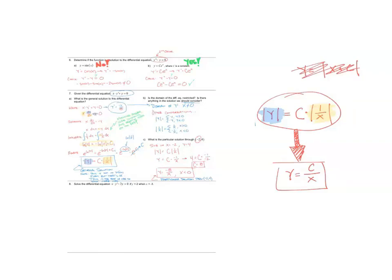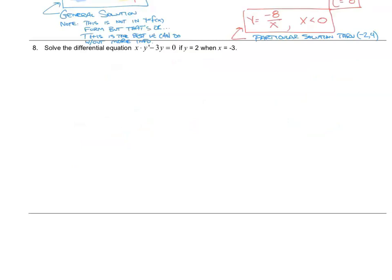Let's jump into problem number eight. We have: solve the differential equation x times y prime minus 3y equals zero, with initial condition y equals 2 when x equals negative 3. Writing as x times dy dx minus 3y equals zero, solving for dy dx gives 3y over x. Note that x cannot equal zero — checking for domain restrictions is part of the write step. Working toward separation of variables, we add 3y to both sides, then arrange with y terms on the left and x terms on the right.